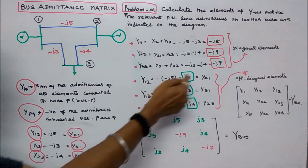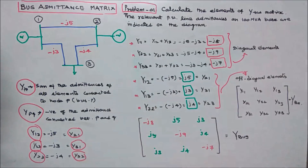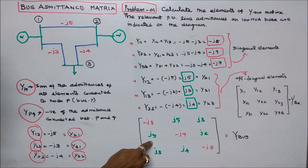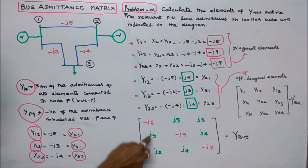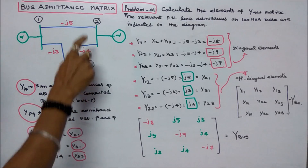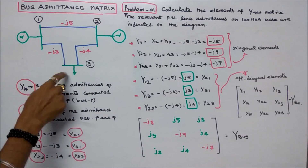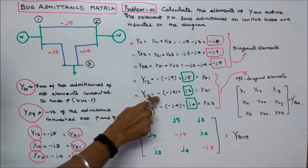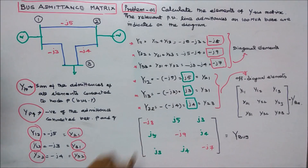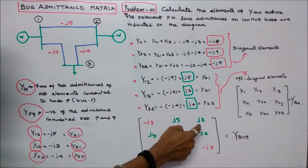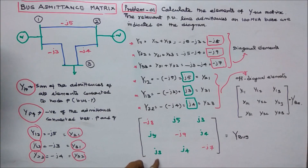So Y12 equals Y21, both equal J5. Y13 is negative of minus J3, which equals J3, and Y31 also equals J3.